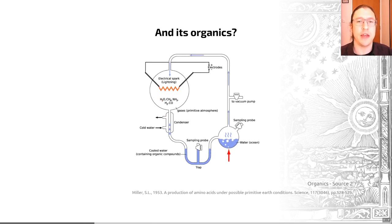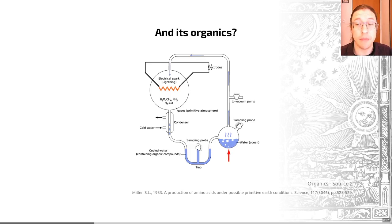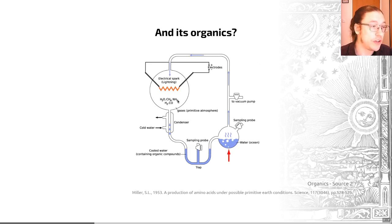Earthbound synthesis is an idea that has quite a strong history. There was a classic experiment by a duo called Urey and Miller in the 1950s. These researchers sealed what they considered to be an accurate primitive atmosphere for early Earth — hydrogen, methane, and ammonia — into a vessel. The experimental setup is shown on this slide on your screen here.